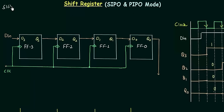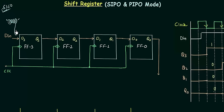We have already completed serial input serial output mode in the last presentation and this is the circuit. As the name suggests, we enter the data in serial manner. The output is taken from Q0 and the data that is being shifted with the clock pulse is taken out from here, so this is our serial output.